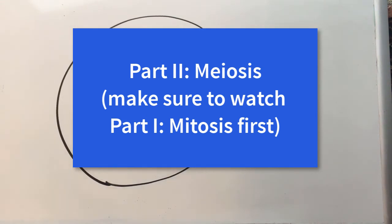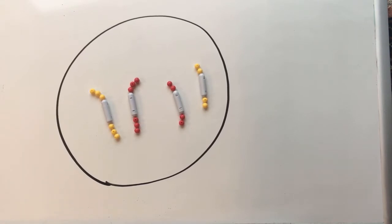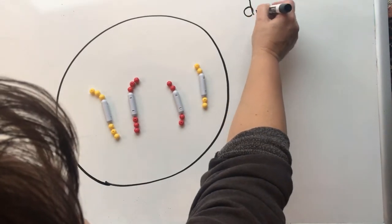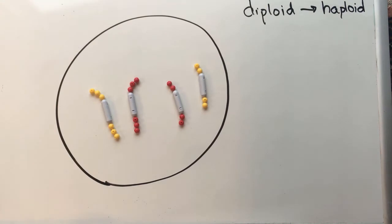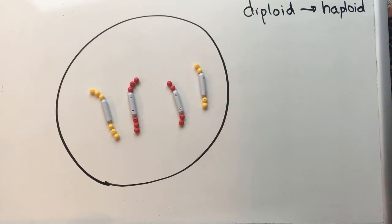Meiosis only happens in your sex cells, or cells that are destined to become your gametes. We go through meiosis because we need to get from being diploid — two copies of each chromosome — to being haploid. During fertilization, a haploid cell meets another haploid cell and together they create a diploid cell, which can become a new organism. So we need to make sure we're haploid when we go through fertilization, otherwise we'll end up with too many copies of chromosomes.